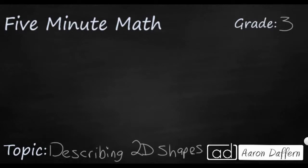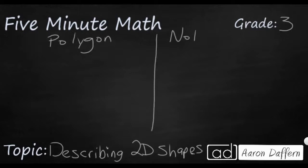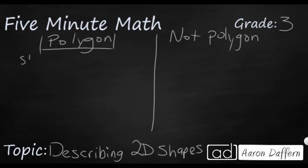The first distinction we need to make is what are polygons and what are not polygons, because that's going to be our largest classification or category. Polygons have two things going for them: first, all of their sides are straight, and secondly, all of their sides are closed — there's no openings. Those are two key characteristics for polygons.